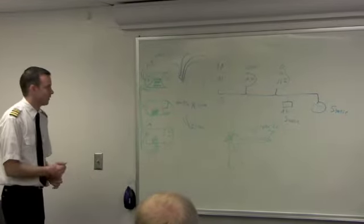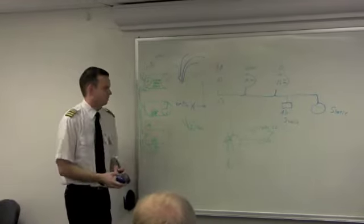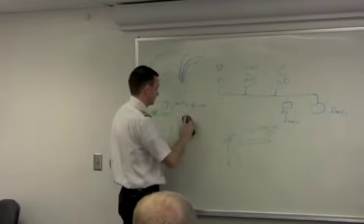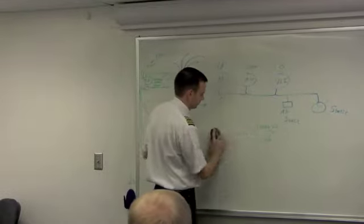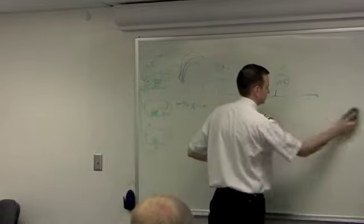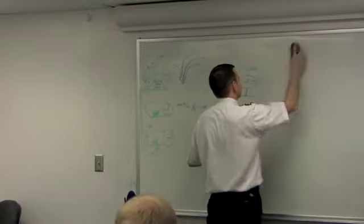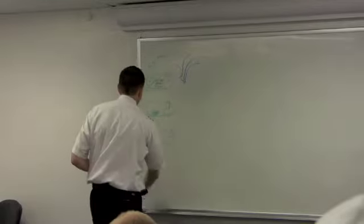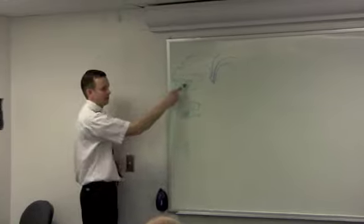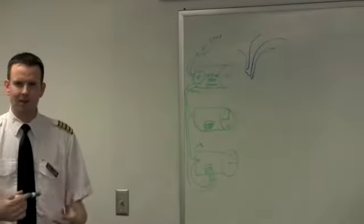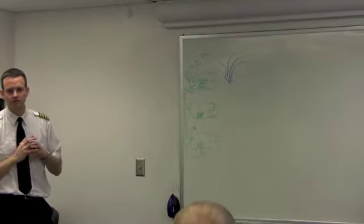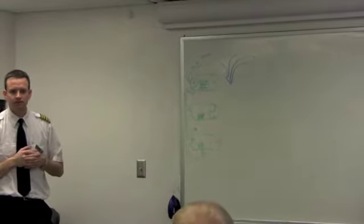Now we get into some questions. What is indicated airspeed? So when we draw this, we have the ram air coming in, and we compare it to the static air. Why do we have to have that comparison? Why can't we just have ram air? Because pressure changes.